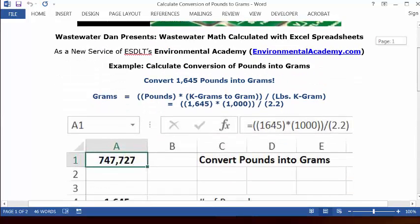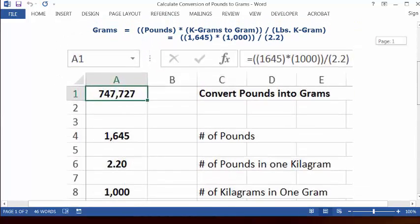So let's go to an Excel spreadsheet and see how we can set this up. Open up a blank spreadsheet, put your cursor in cell C1, type 'convert pounds into grams.'